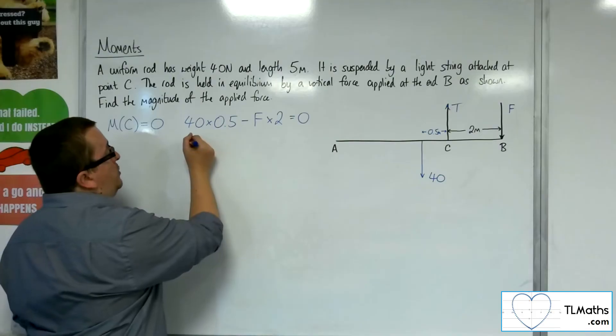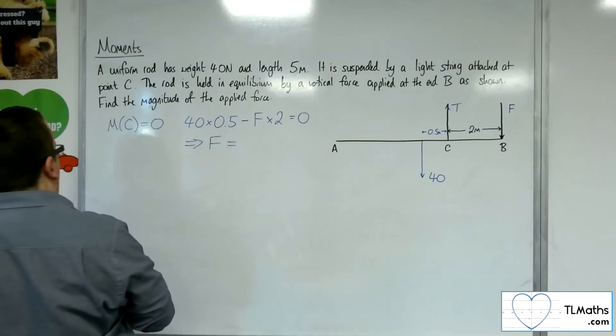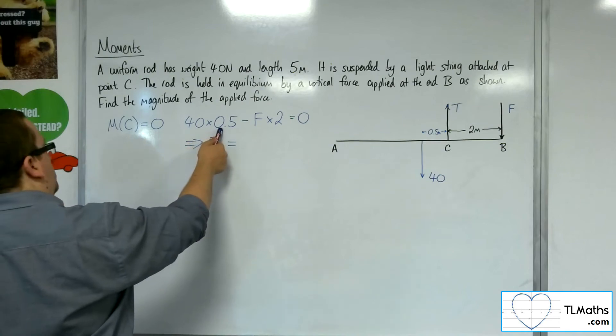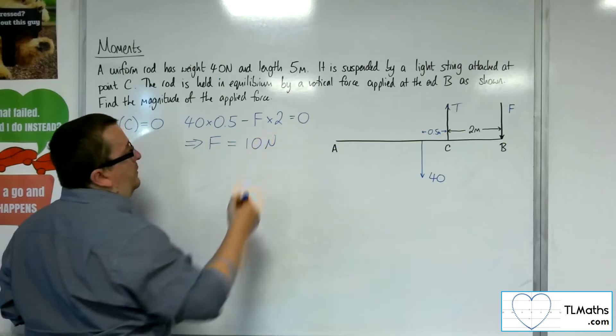So this gives me an equation where I can find F. So what have we got? We've got 40 times 0.5, so 20, divided by 2, so 10. So F must be 10 newtons.